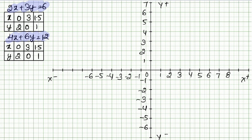Now let's plot the points. When x is 0, y is 2 — we mark that point. When x is 3, y is 0 — we mark that point. When x is 1.5, y is 1 — we mark that point. Both equations give the same points: (0,2), (3,0), and (1.5,1).